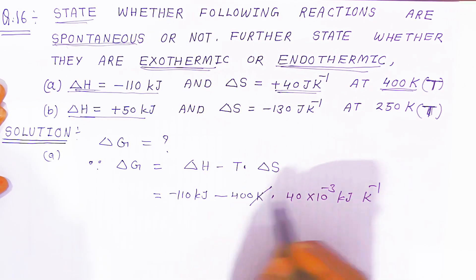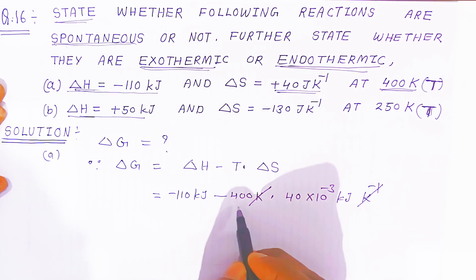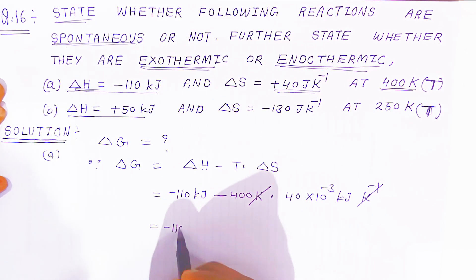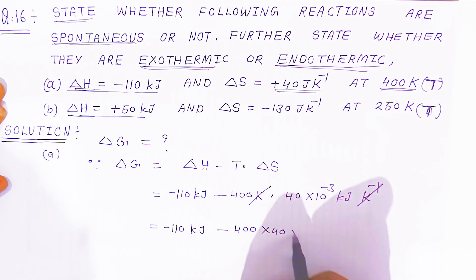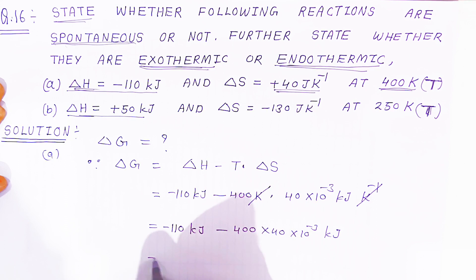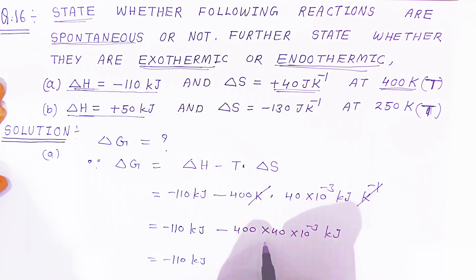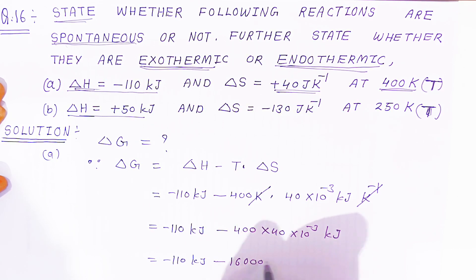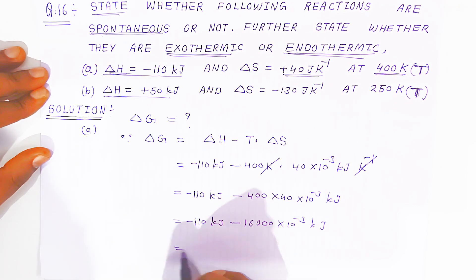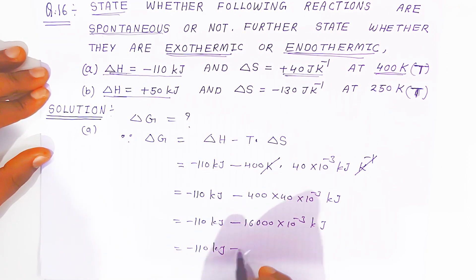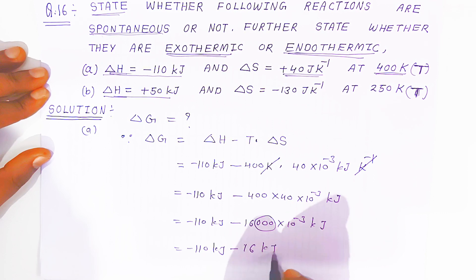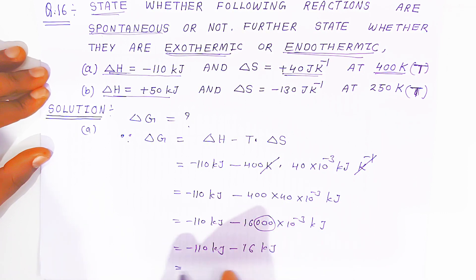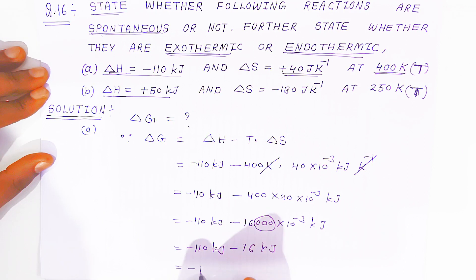The kelvin and per kelvin will cancel, so only the numerical part remains. Multiplying 400 into 40 into 10 raised to minus 3 gives 16,000 into 10 raised to minus 3 kilojoule. Dividing by 10 raised to minus 3, it becomes 16 kilojoule. So change in Gibbs energy is: minus 110 kilojoule minus 16 kilojoule, which gives minus 126 kilojoule. So ΔG is negative — that is minus 126 kilojoule.